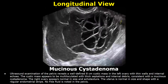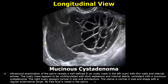Now we will look at mucinous cystadenoma. A cystic mass is seen with thin walls and internal echoes. The cystic mass appears to be multi-loculated with thick septations and internal debris, consistent with a mucinous cystadenoma. Then the appearance of the other ovary is written, followed by the appearance of the uterus, and in the end there is mention of absence of free fluid in the pelvis.